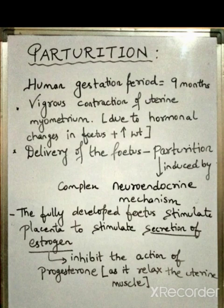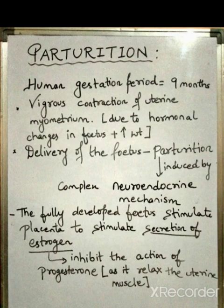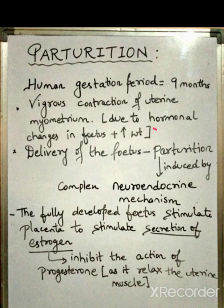When 9 months are complete, contractions develop in the mother's uterus, which is a signal that the baby is well developed and ready to get out of the body. These contractions are due to the myometrium layer of the uterus, caused by hormonal changes in the fetus, as well as the increase in fetal weight.